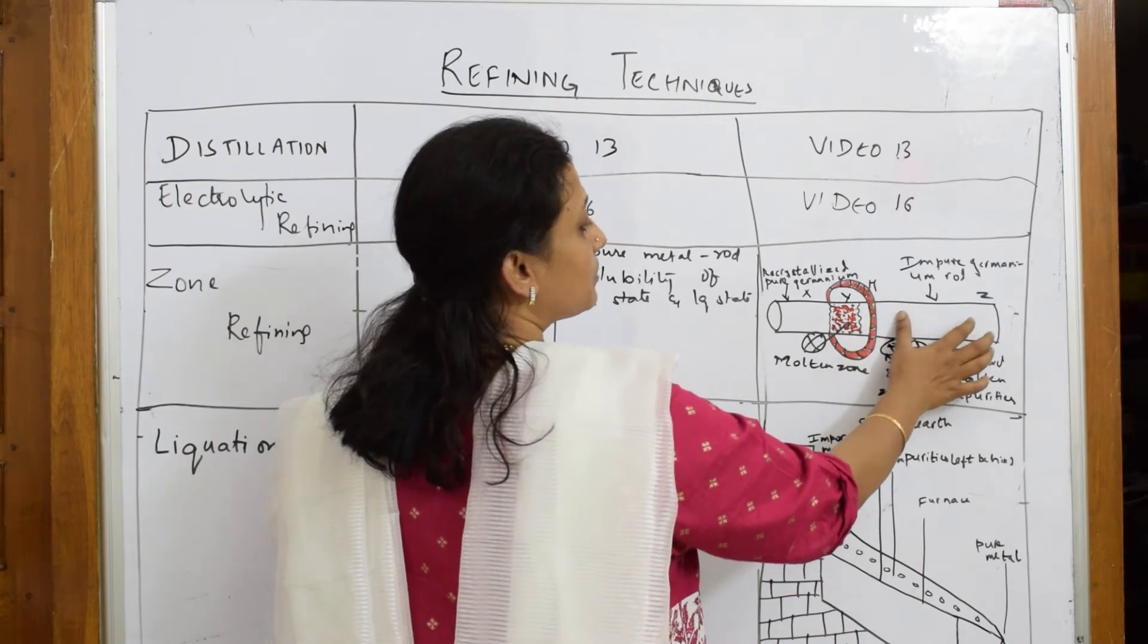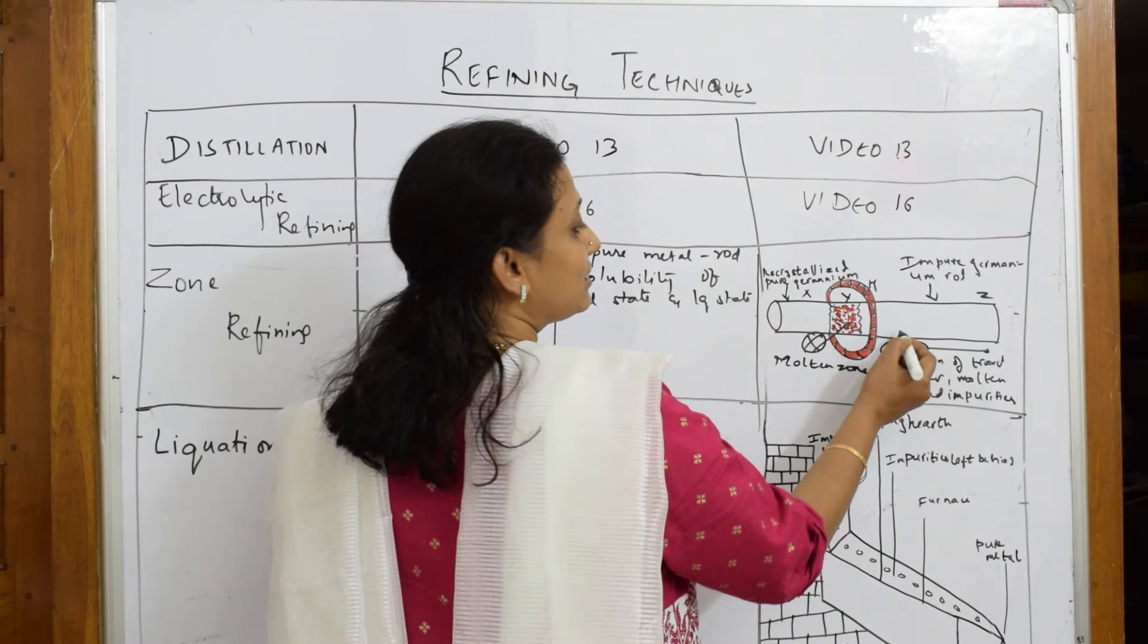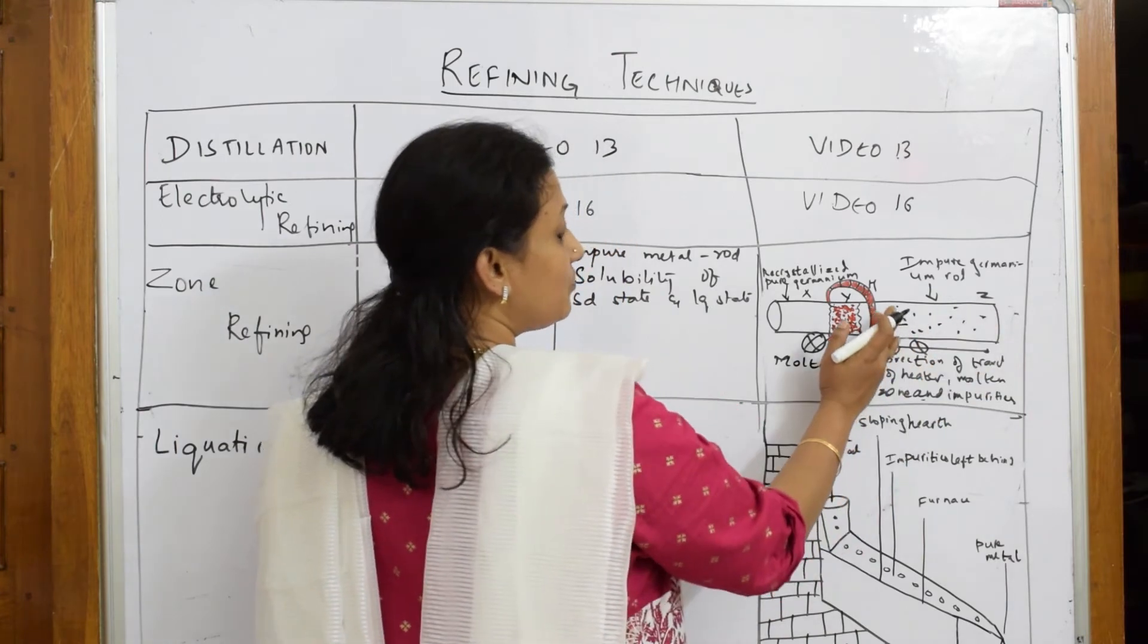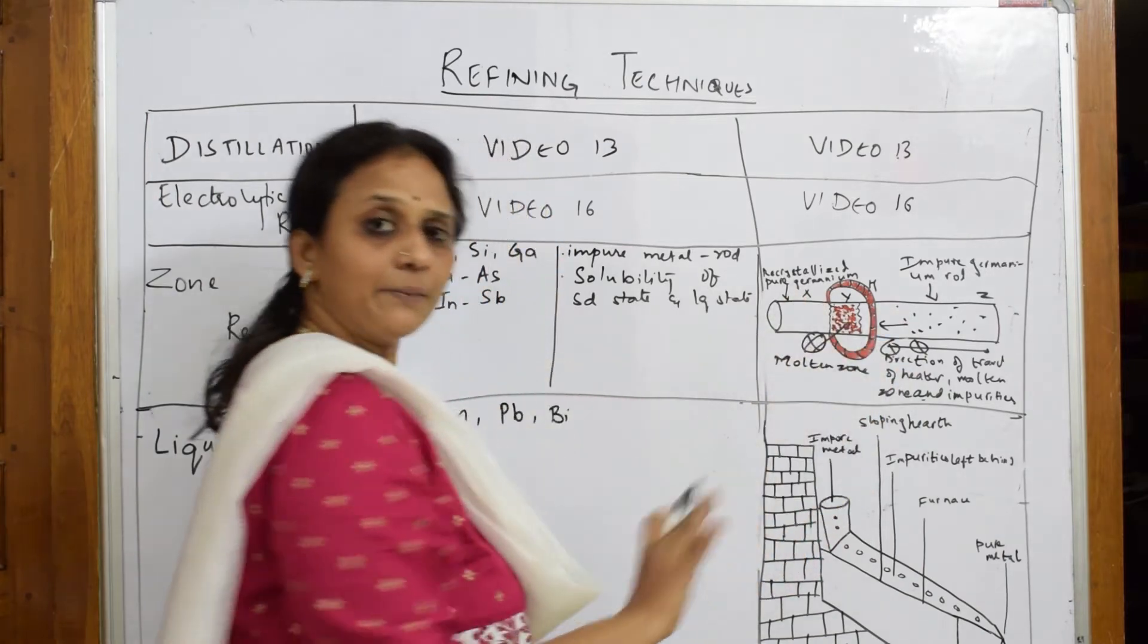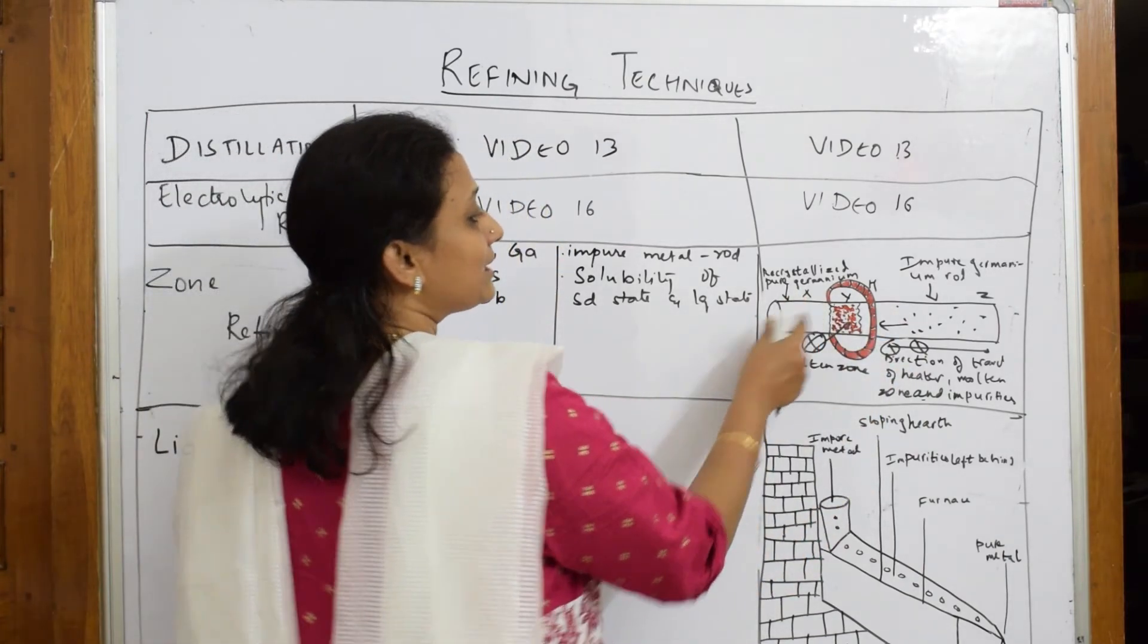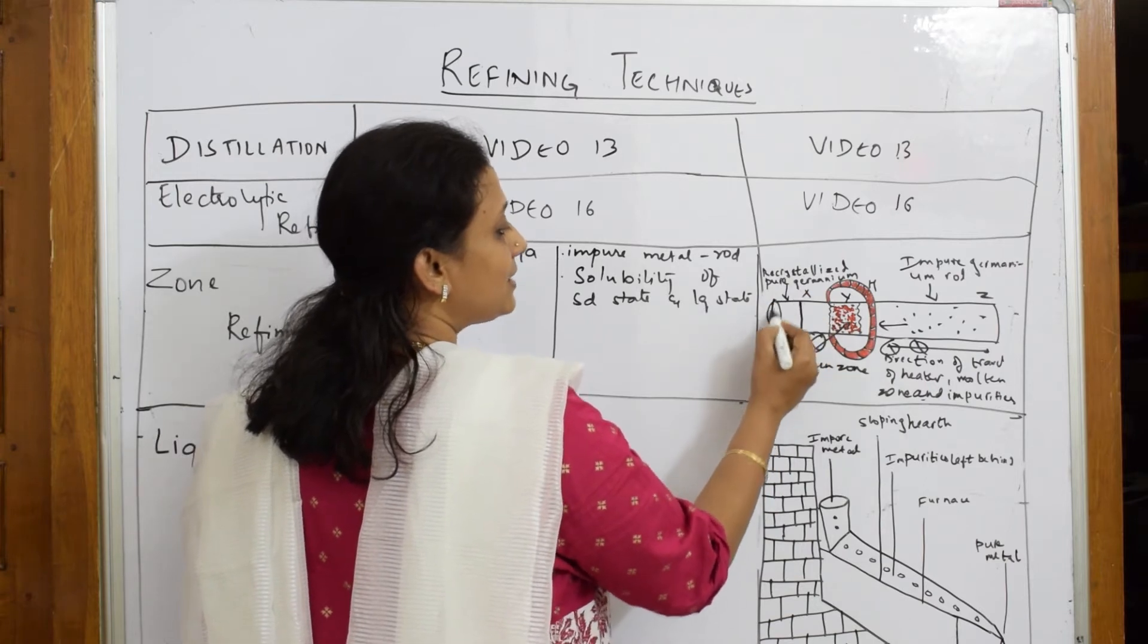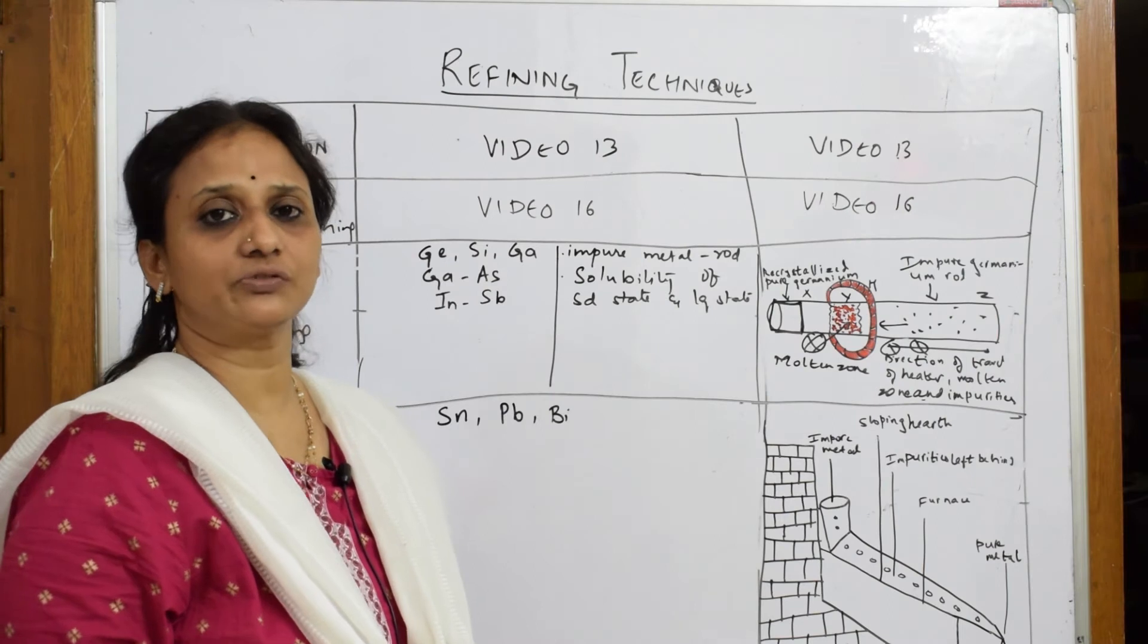Just see, now they've taken impure germanium rod here. As the direction of the roller is in this direction, all the impurities start settling here. As the roller moves in this direction, all the impurities get collected on one side and the pure metal gets recrystallized here. This part of the pure metal is cut and that's the purest form which is used further.